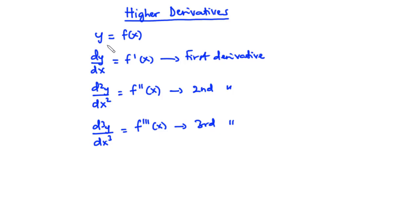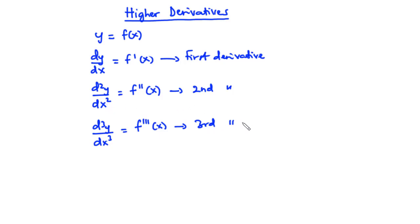So when you have a function y equals f of x, when you differentiate y you have dy/dx which is equal to f prime of x — the first derivative. Differentiating dy/dx gives the second derivative, and differentiating d²y/dx² gives the third derivative of y with respect to x.